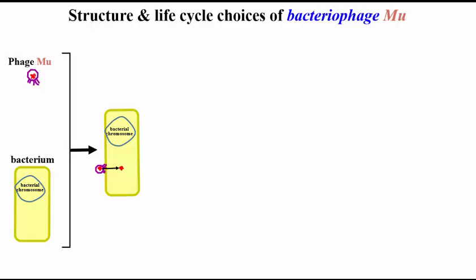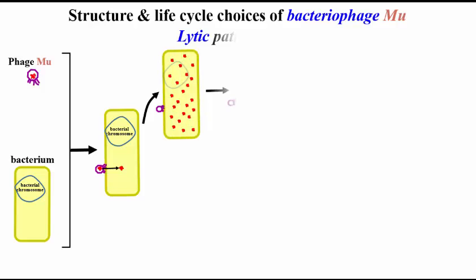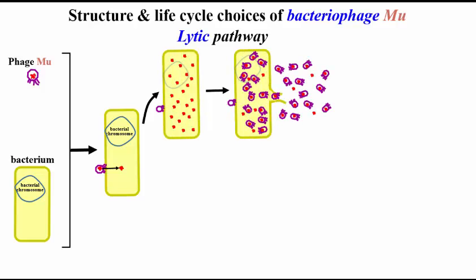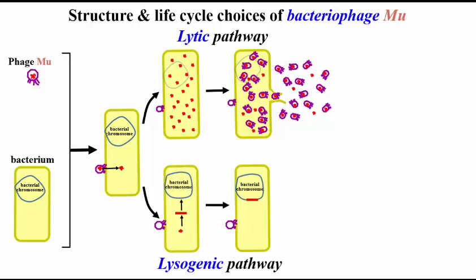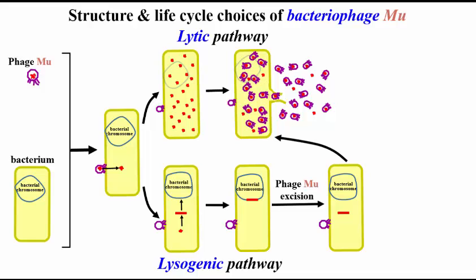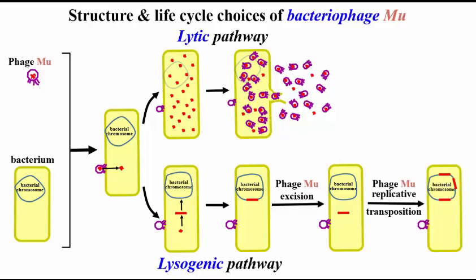Now let's look at the added option for bacteriophage mu. The upper pathway is similar to the lytic pathway for other bacteriophage. Mu can also enter the lysogenic pathway, as shown in the lower part of the illustration. And mu, like other phage, can excise itself and re-enter the lytic pathway under appropriate conditions. Or, once excised, it can instead transpose to other locations in the bacterial chromosome. Like the excision and resumption of lytic activity, transposon activity is often correlated with stress.